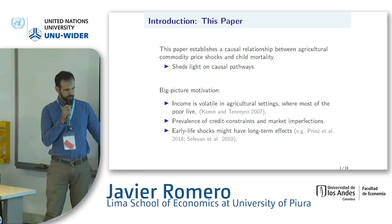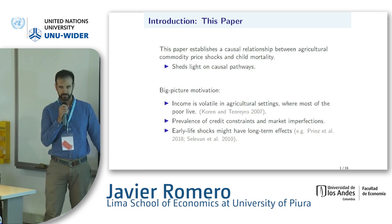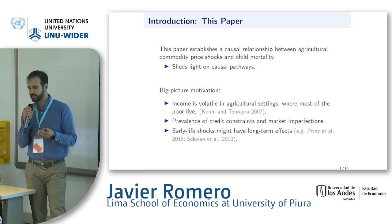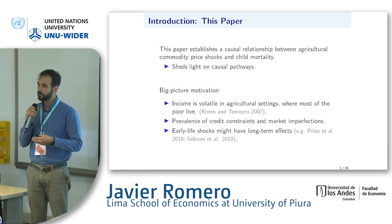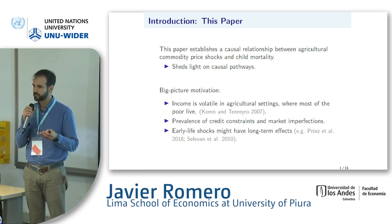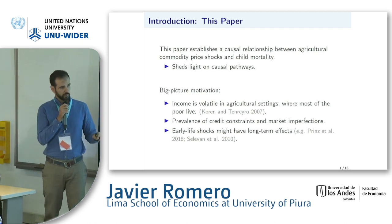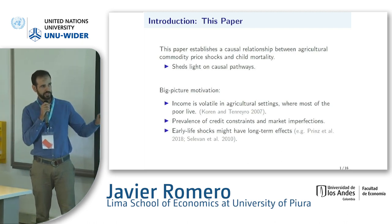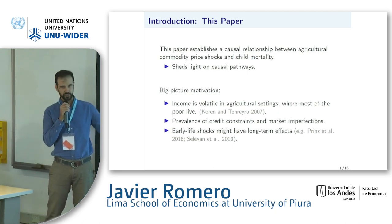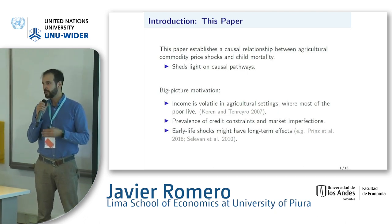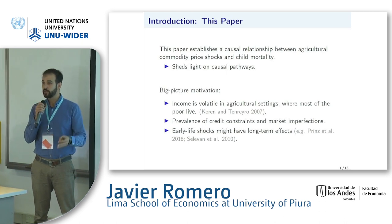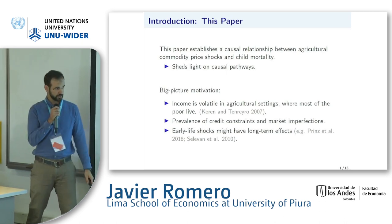We started this paper because there's a literature on aggregate income shocks and child mortality. However, the evidence for developing countries is quite mixed — sometimes we find that mortality increases, sometimes we find that it does not. So what we wanted to do was to get a clear natural experiment, identify the channels at play, and shed some light on why we're getting these mixed results in the literature.